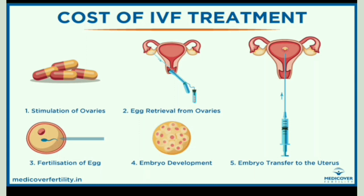This diagram explains the overall setup of IVF. First, the ovaries are stimulated using medications. After stimulation, the eggs are released and collected. These collected eggs are fertilized using sperm, and after fertilization the embryos are developed. Once embryo development is completed, the embryos are transferred to the uterus using a speculum and a catheter.